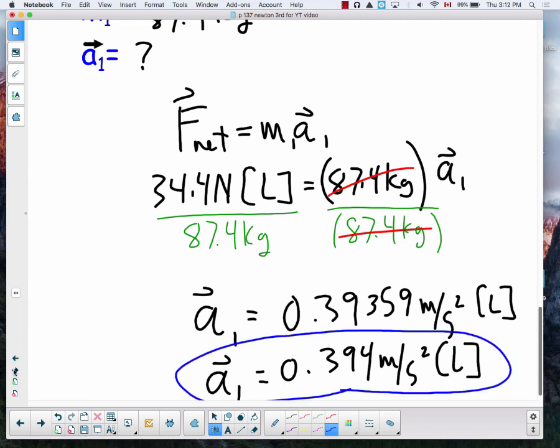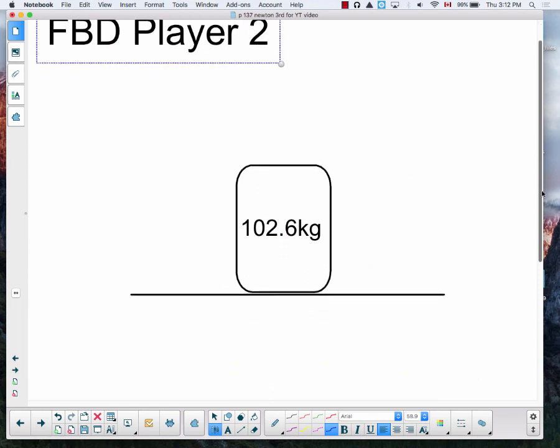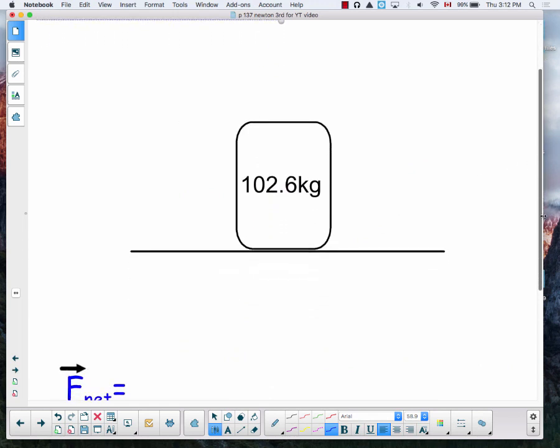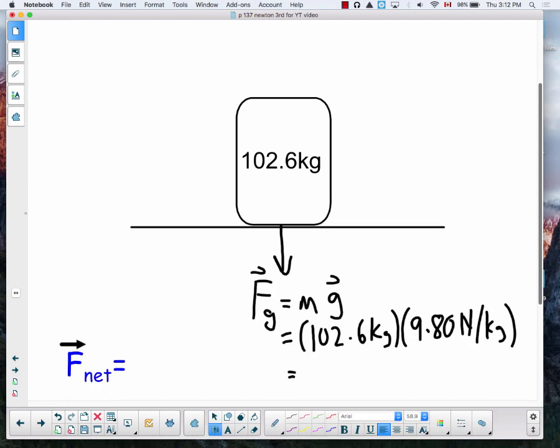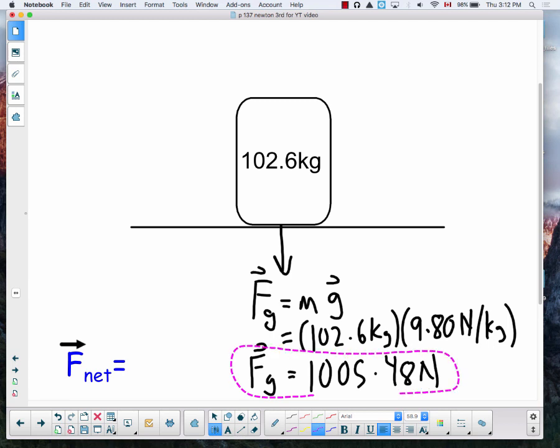Now for player number two, free body diagram just like we did with the first one. The force down gives us 1005.48 newtons. Just like with the first hockey player, the force down which is gravity and the force of the ice pushing back up need to be equal magnitude. We know that the normal force is also 1005.48.